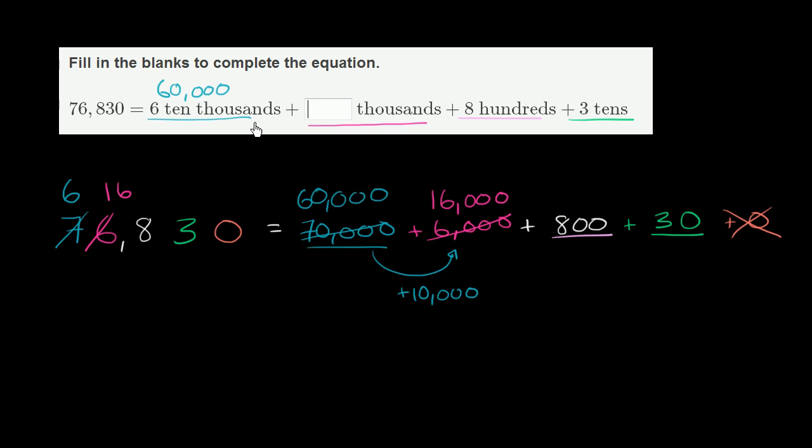So now what we wrote here looks just like what they wrote up here. This is six ten thousands plus 16 thousands plus eight hundreds plus three tens. And we're done.